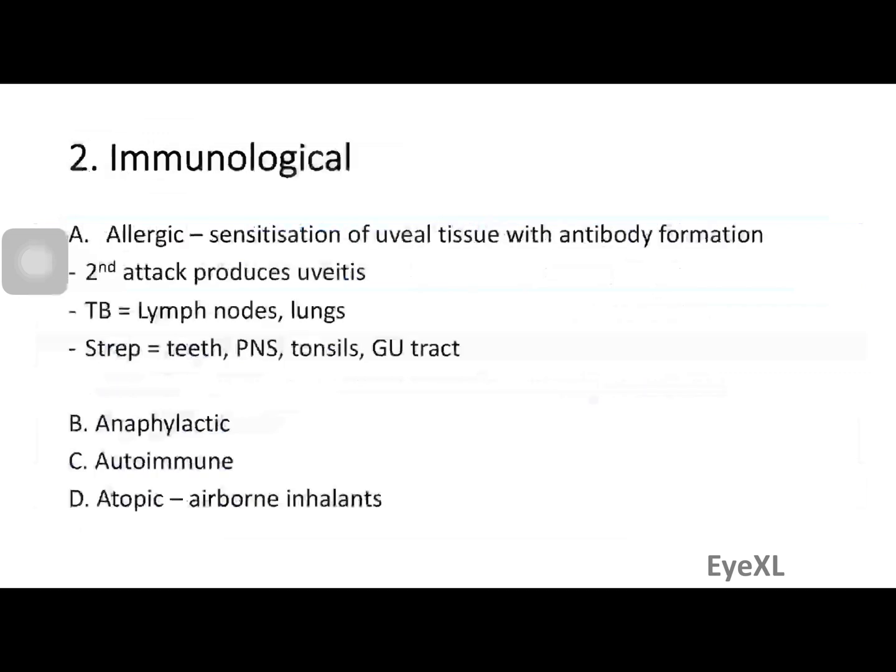The second theory is immunological. Most importantly, there is an allergic reaction to some organism: the uveal tissue becomes sensitized with antibody production, and a second attack by the same organism produces uveitis. For example, if one organism of tuberculosis reaches the uvea, the patient develops an immune response — but it is the second attack that incites the allergic reaction, not the first.